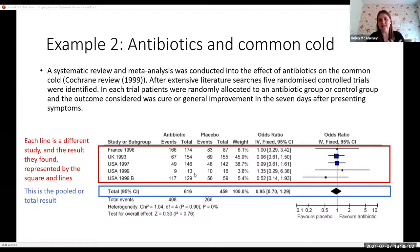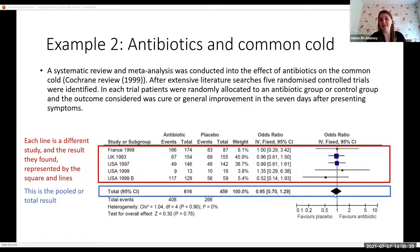Here's another example — antibiotics in the common cold — where there were a number of studies. You actually have the forest plot on the right hand side. The pooled result, shown by the diamond shape, has the value of one going through it, meaning antibiotics do not reduce the occurrence or effectively treat the common cold.